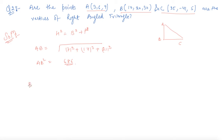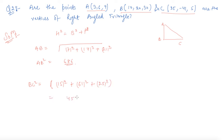Now let us find BC squared. BC squared is: (15 minus something) squared, plus (minus 41 minus 20) which is minus 61 squared, plus (5 minus 30) which is minus 25 squared. This comes out to be 4571. So that is BC squared.